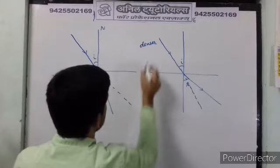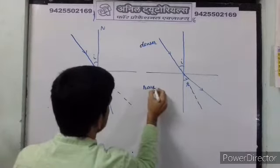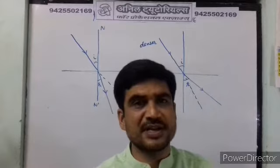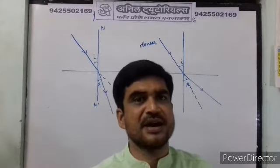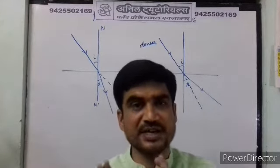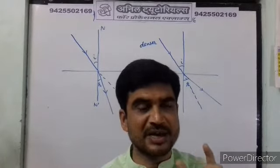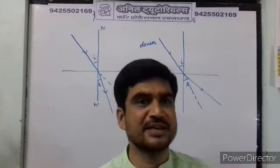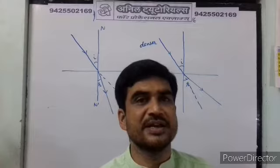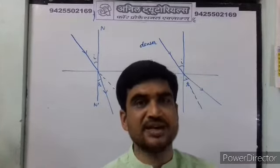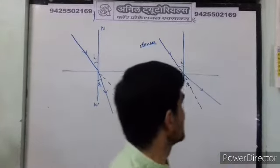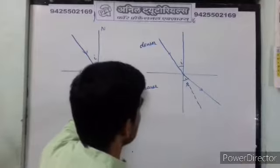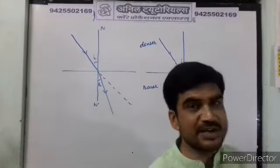This is the denser medium and this is the rarer medium. How do we say which medium is rarer and which is denser? As we saw, the ratio of sine i to sine r is constant, and that constant is called the refractive index. If the refractive index of a particular medium is more, then it is called denser, and if it is less, it is called rarer — it's just a comparative study.